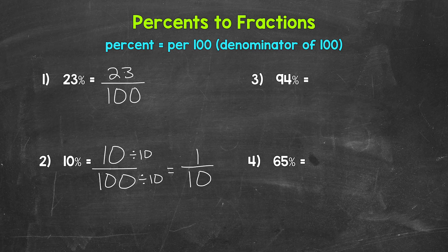The only common factor between one and 10 is one, so this is in simplest form. We are done here. 10% equals 10 over 100, 10 hundredths, but we were able to simplify that to one over 10, one tenth.